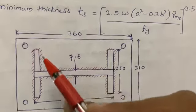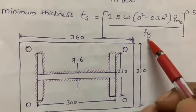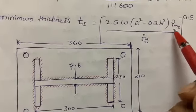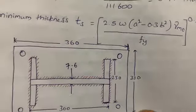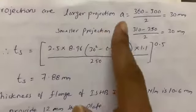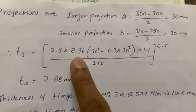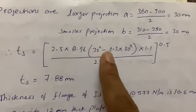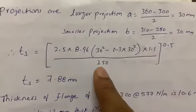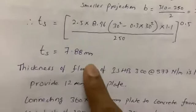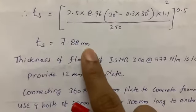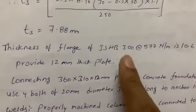Here f_y is the yield stress and γ_M0 is the partial safety factor from Table 5. Substituting values: t_s = [ 2.5 × 8.96 × (30² − 0.3 × 30²) × 1.1 / 250 ]^0.5. I got t_s = 7.88 mm. The given section is ISHB 300 at 577 N/m and the flange thickness is 10.6 mm from the steel tables.